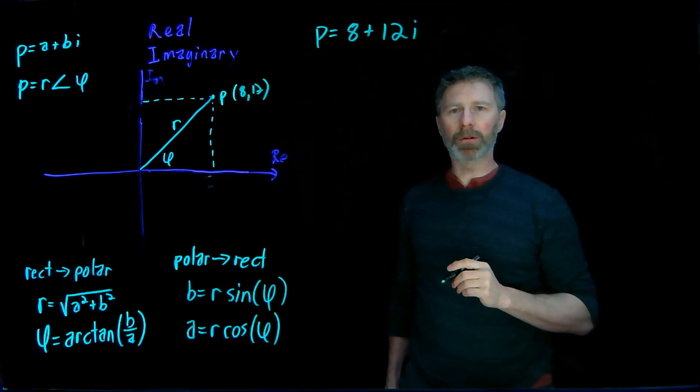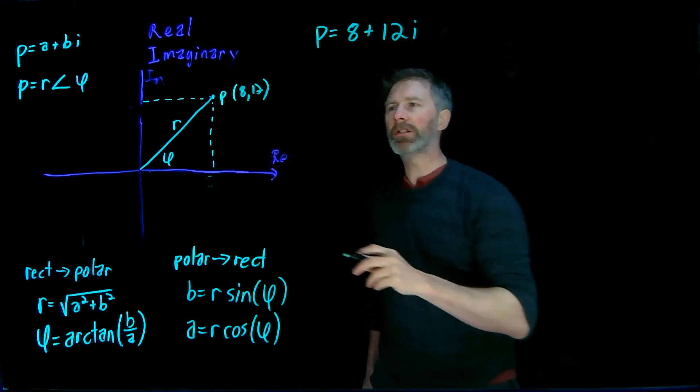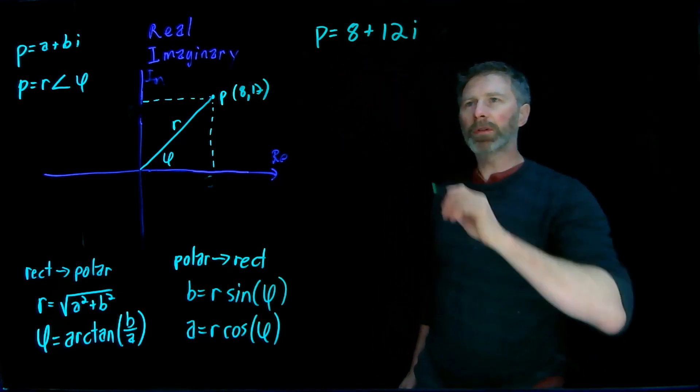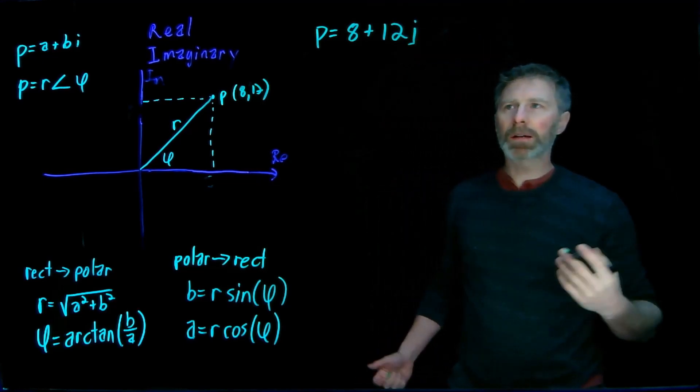All right, well, let's do a simple example. We have a point that's at 8 on the real axis and 12 on the imaginary axis. So that, in the rectangular coordinate form, is P equals 8 plus 12i. You know what? I'm going to use J because I'm an electrical engineer.